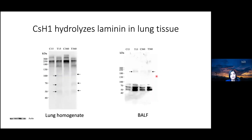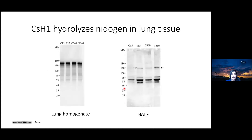For laminin, another important basement membrane component, lung homogenate control samples showed bands at the expected molecular weights for native laminin subunits of more than 300, 250, and a faint band at 150 kilodaltons. After toxin injection, new bands appeared corresponding to degradation products. BAL samples showed three immunoreactive bands of low molecular weight, likely degradation products. For nidogen, lung homogenates showed no apparent degradation, but BAL samples showed three main bands of low molecular weight in all four groups, and an additional band of 130 kilodaltons corresponding to the intact nidogen chain was detected in treatment groups.